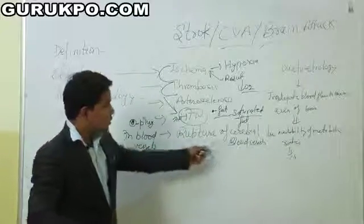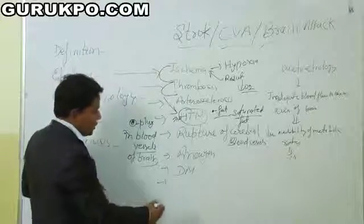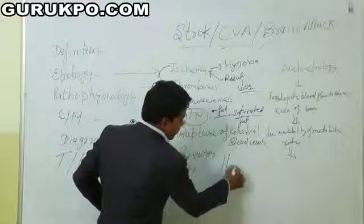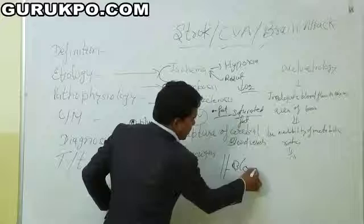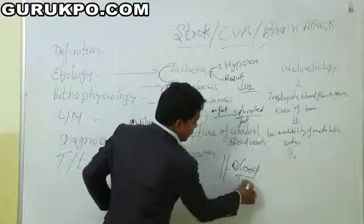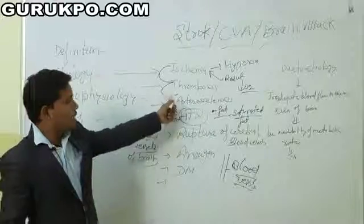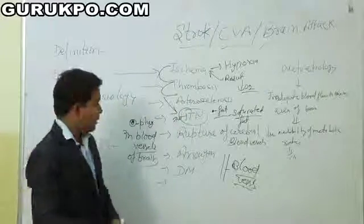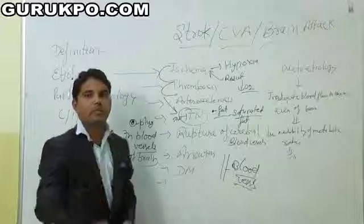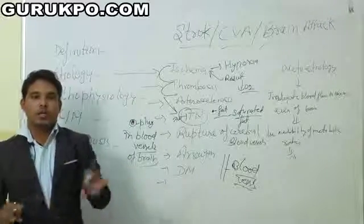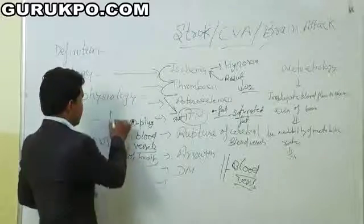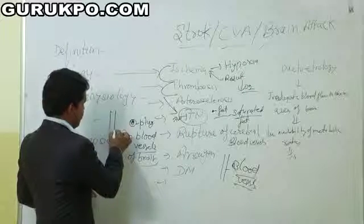Next is rupture of the cerebral blood vessels. Any rupture of the cerebral blood vessels due to hypertension, atherosclerosis, thrombosis, and ischemic condition. And next one is aneurysm. Aneurysm means narrowing of the blood vessels.